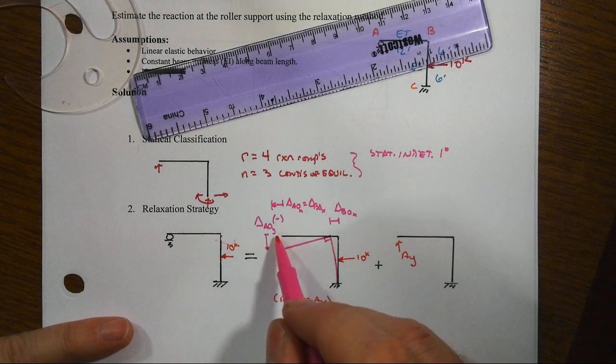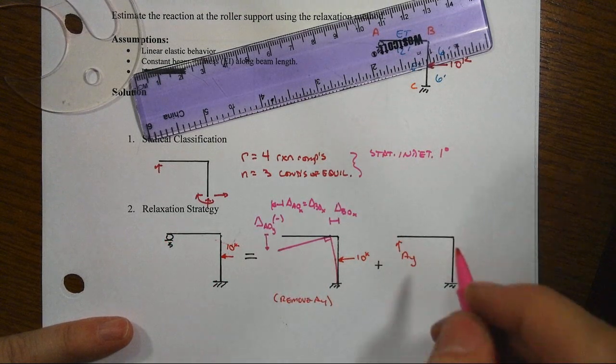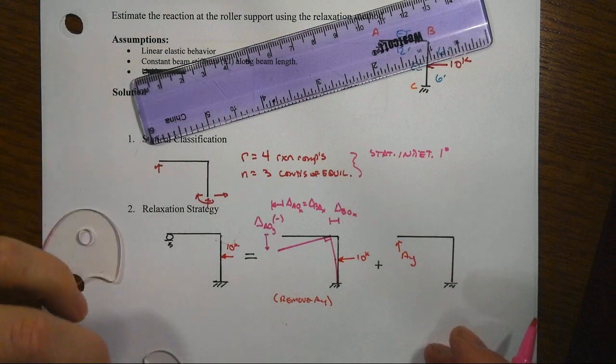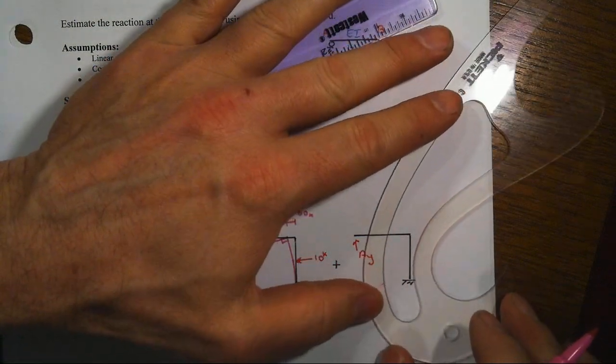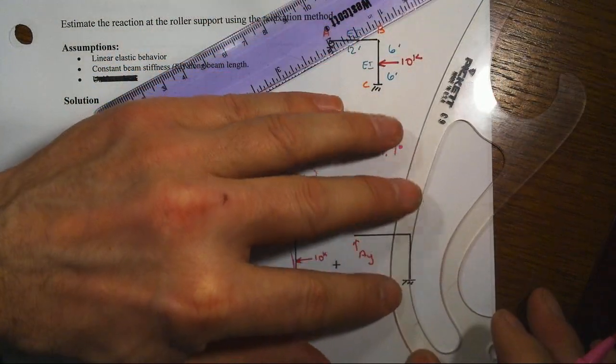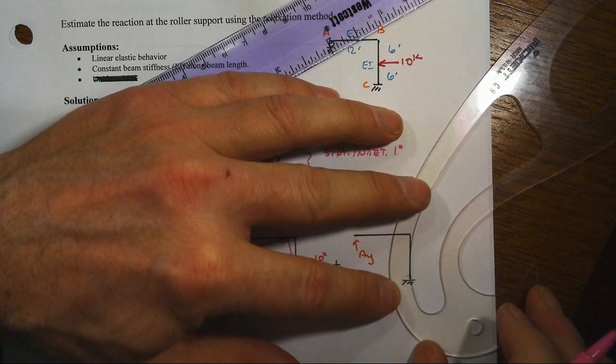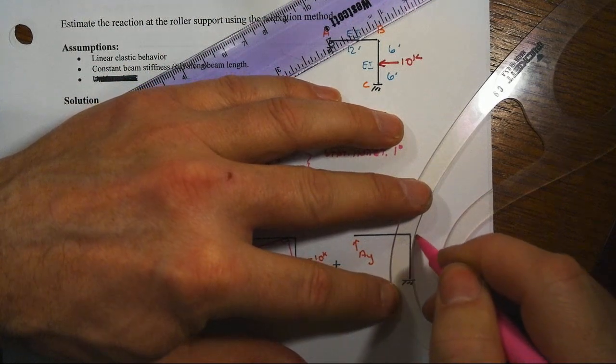We've allowed that left end to go downwards and it's not supposed to. So that means that we're going to have to push it back into place. That's going to create a deflected shape for this same primary structure but with a different loading pattern that will begin to look something like so.